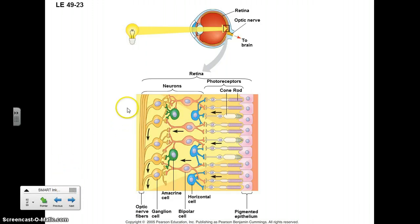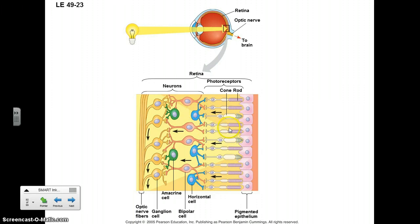Here we are on the retina. On the left is the inside of the eye, and here is the base of the retina. Light shines through, and when it hits the photoreceptors — the rods and cones — they respond to the light, sending a signal to the bipolar cells, which are the ones that connect to the nerve cells.